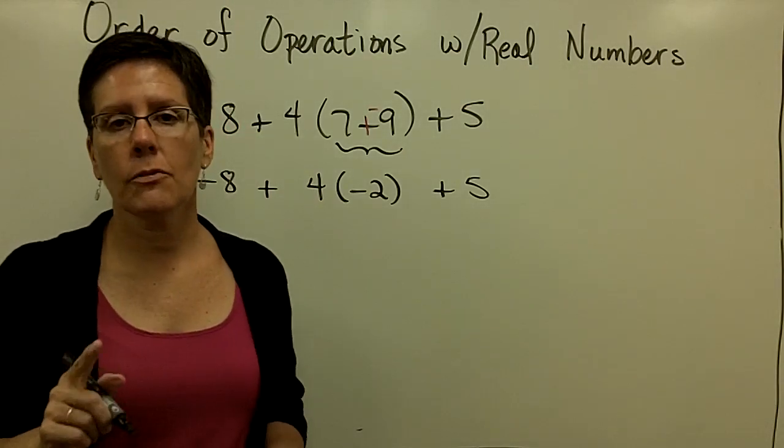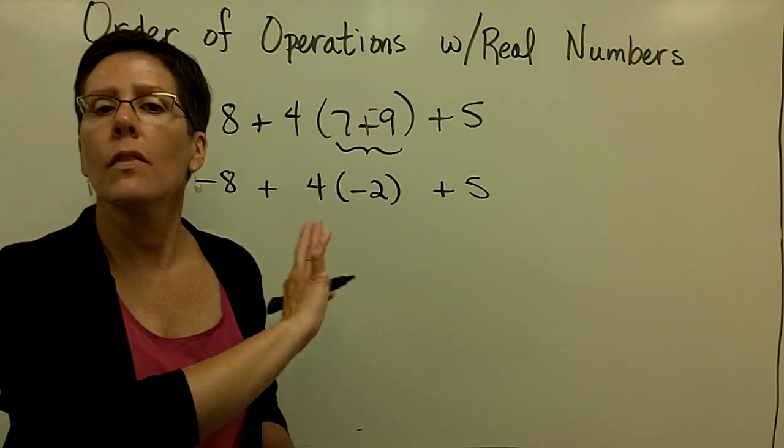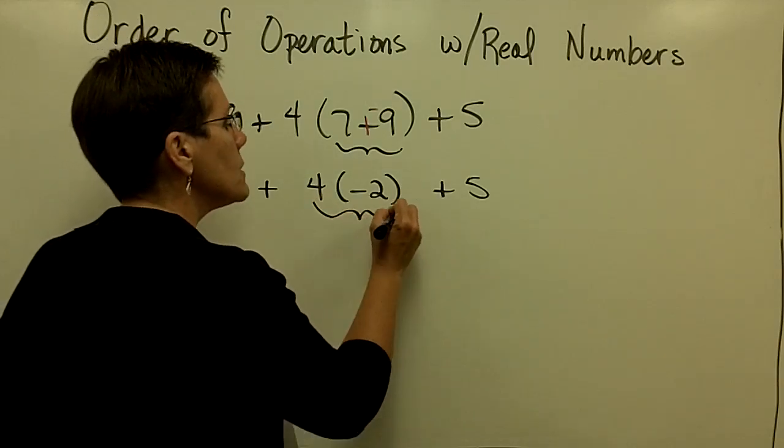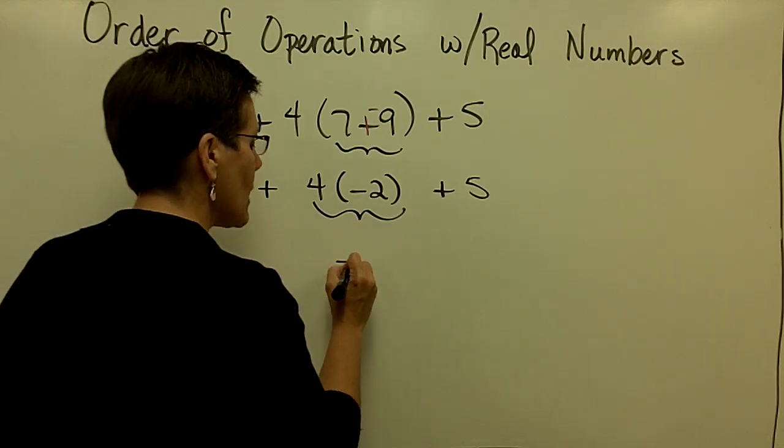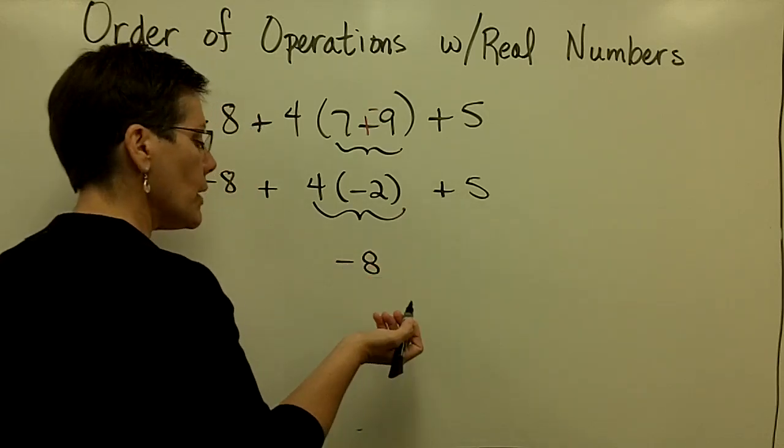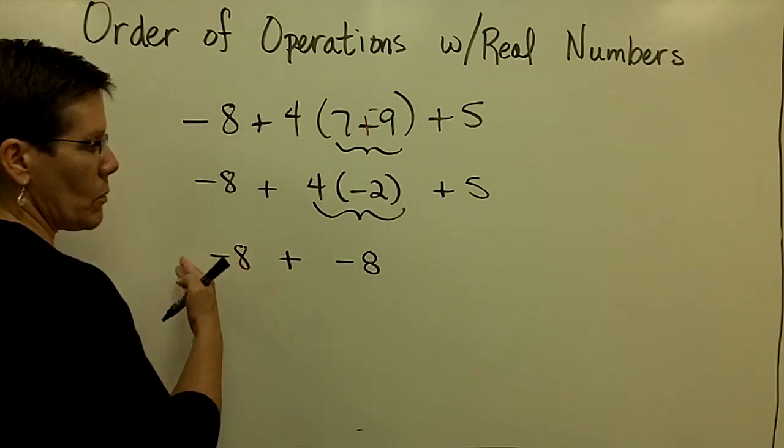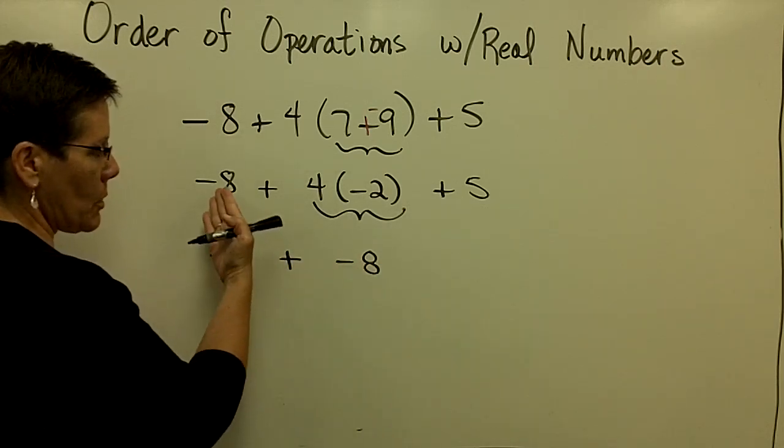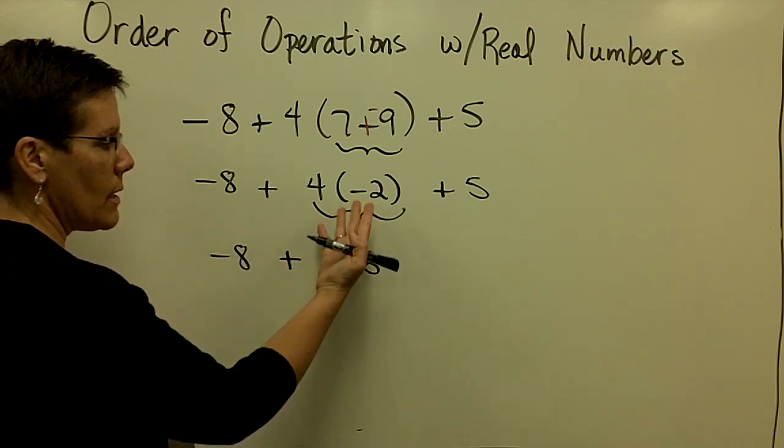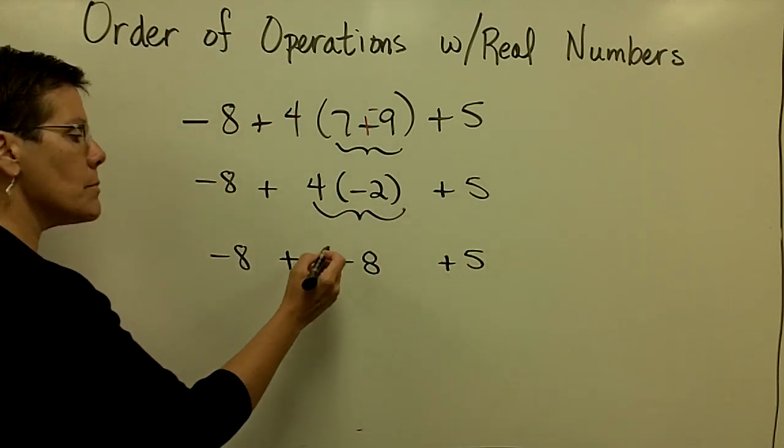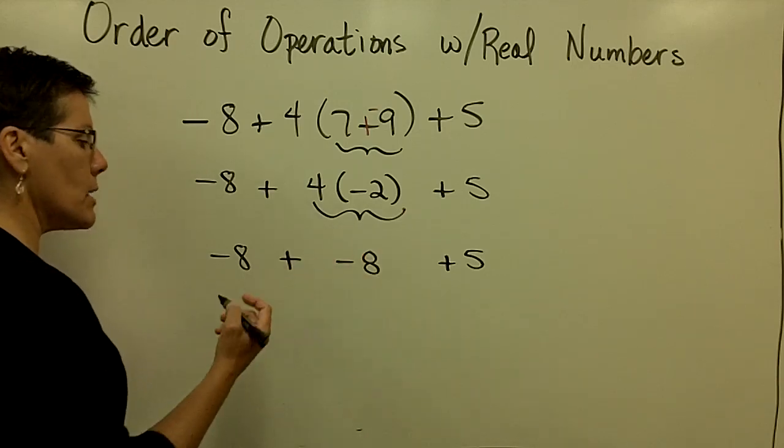Order of operations says after you've done the parentheses, do you have exponents? There are none. Next I will multiply. So I have 4 times negative 2, which gives me negative 8. I can put it in parentheses if I want, or I can just bring this sign down and see that working from left to right, I'm going to have negative 8 plus that negative 8 and then I'll add that 5. So sometimes an author will put this in parentheses. I'm not going to bother.